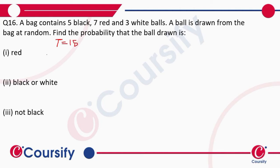Now, how many red balls are there? There are 7 red balls. Therefore, the probability of the ball being red is going to be 7 upon 15. For part (ii), black or white, how many black or white balls are there?